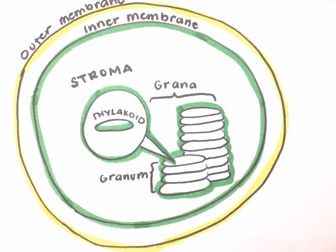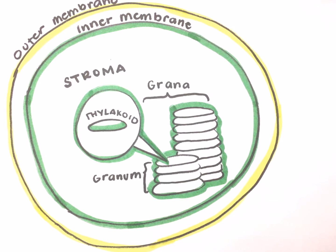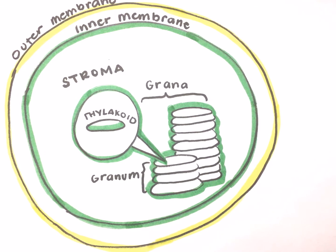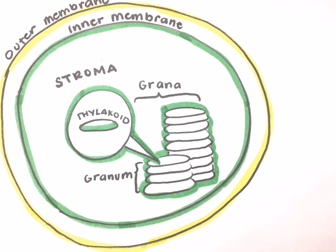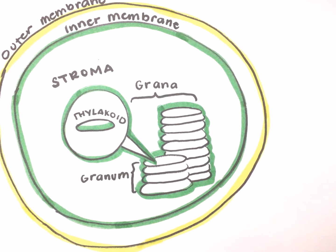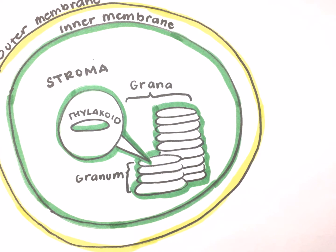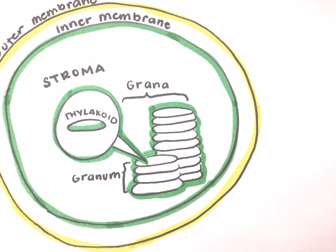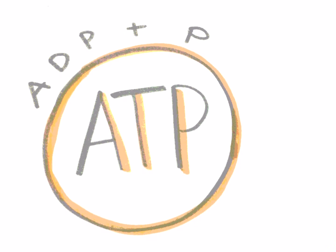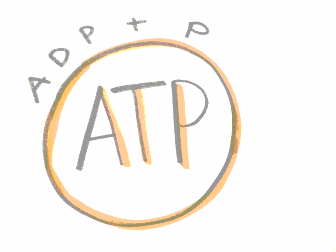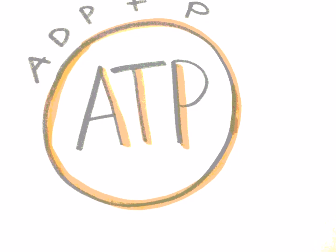Stroma is the space between the inner chloroplast membrane and the grana where the Calvin cycle takes place. The inner membrane forms a border to the stroma and regulates passage of materials in and out of the chloroplast. The outer membrane is a semi-porous membrane permeable to small molecules. ATP, or adenosine triphosphate, is the principal energy supply molecule for cellular function in all cells, formed by ADP plus P.